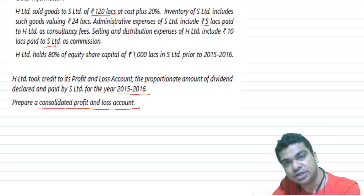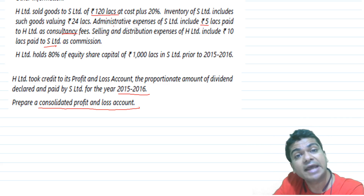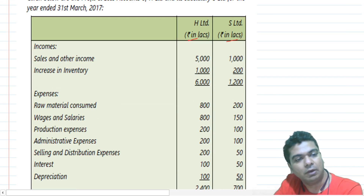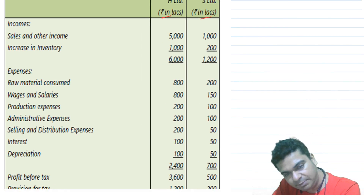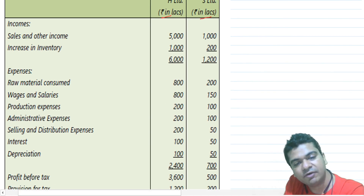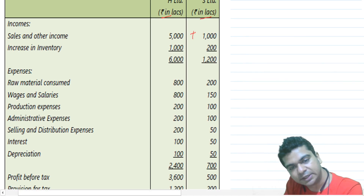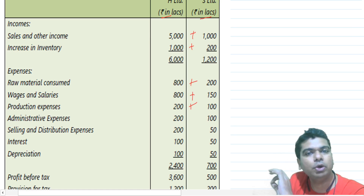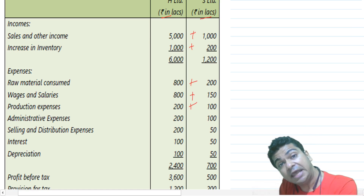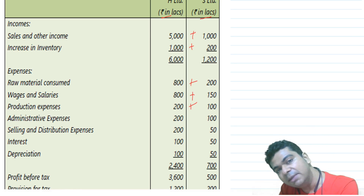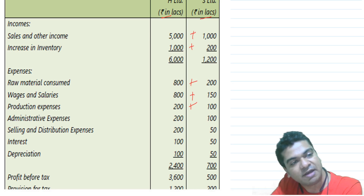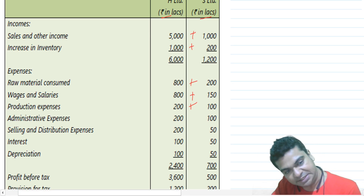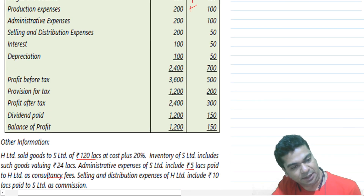The principle of consolidation remains the same — you have to do line by line addition. Sales and other income, take a line by line addition. If there is any intercompany transaction, it is to be eliminated when we prepare the P&L — remove it from the debit side, remove it from the credit side. So which are the intercompany transactions?